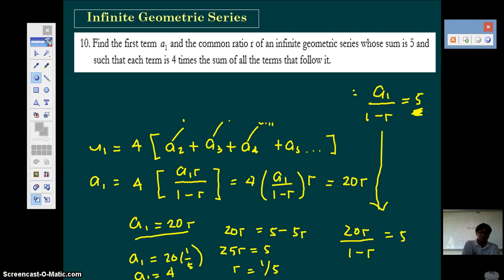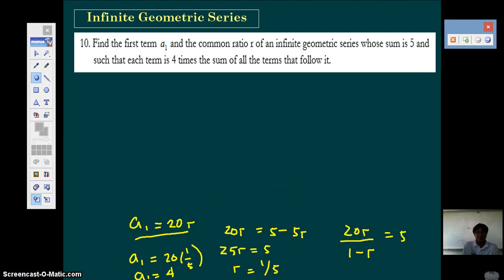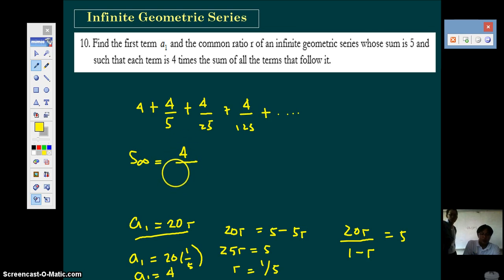Now let's check that. So our series is 4 plus 4 over 5, multiply 1 fifth to the term, so the next must be 4 over 25, the next must be 4 over 125, and so on. So notice that you get the sum of this infinite series, you get 4, the first term over 1 minus r which is 1 over 5. So that will give you 4 over 4 fifths or 5. So this condition is satisfied.